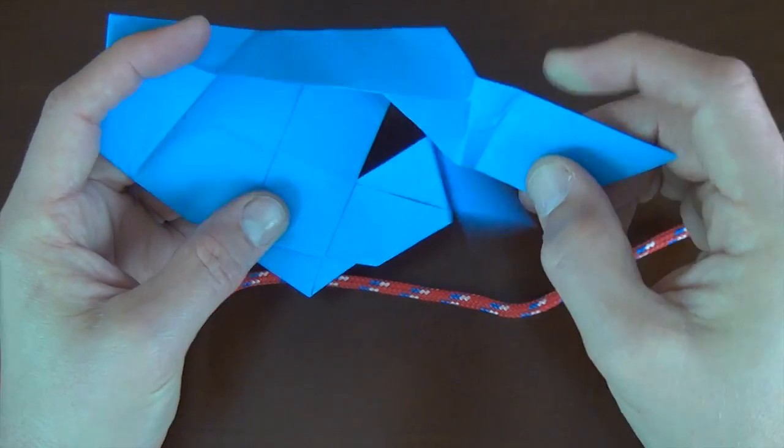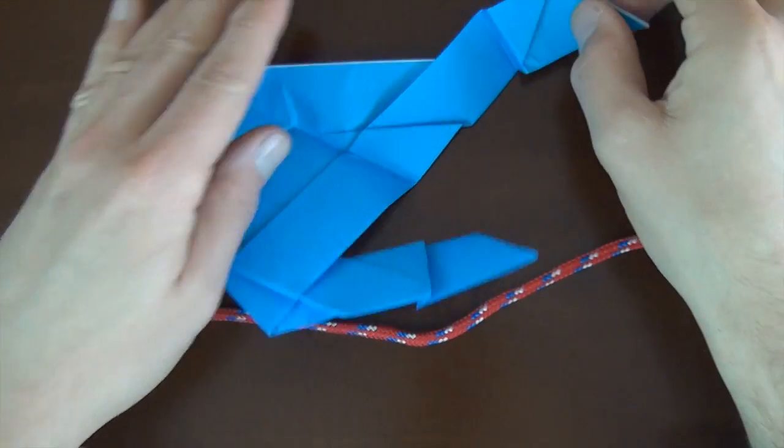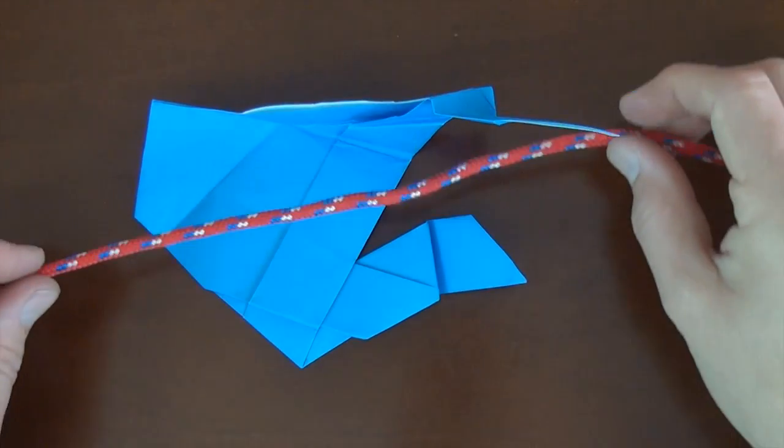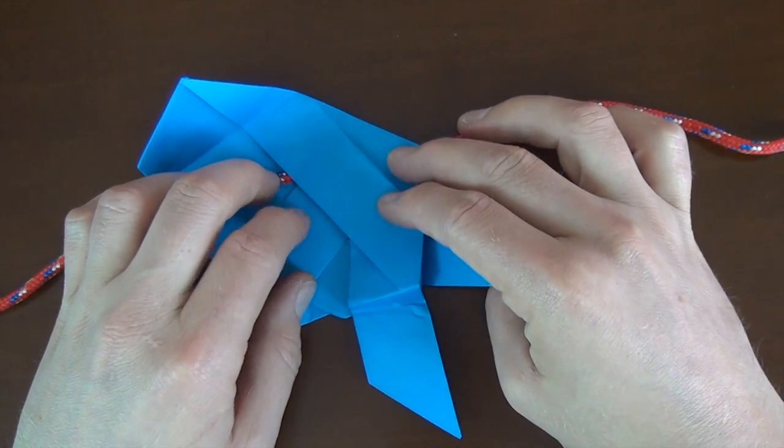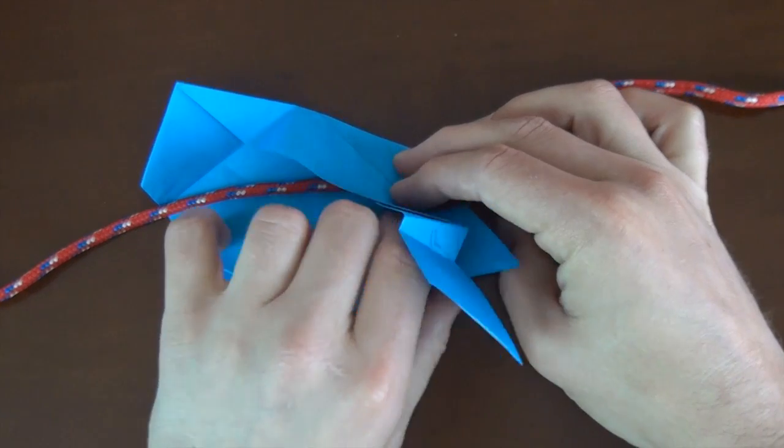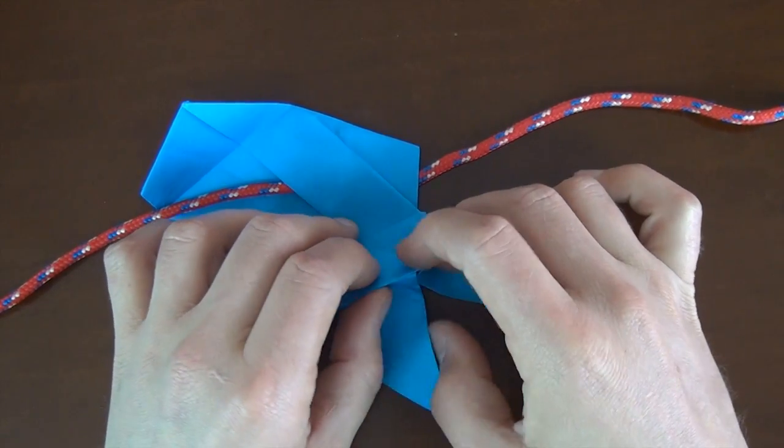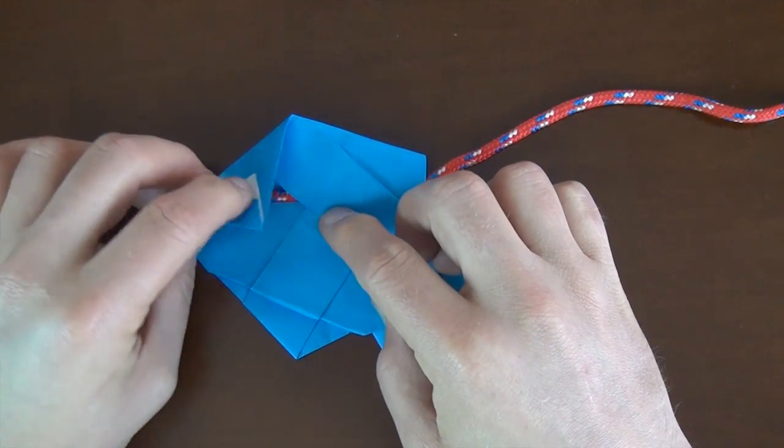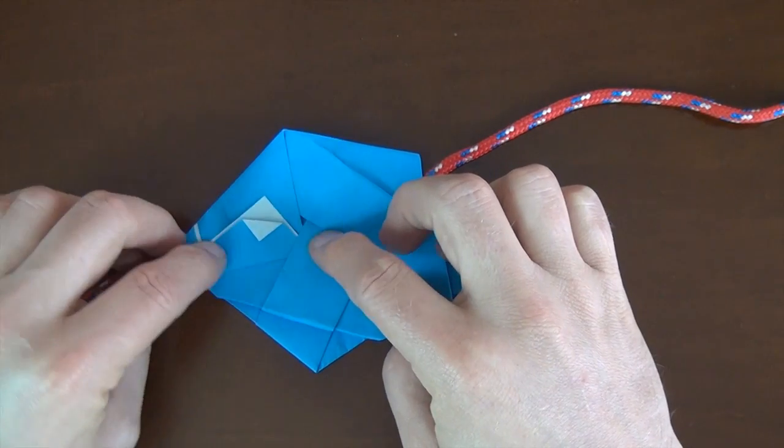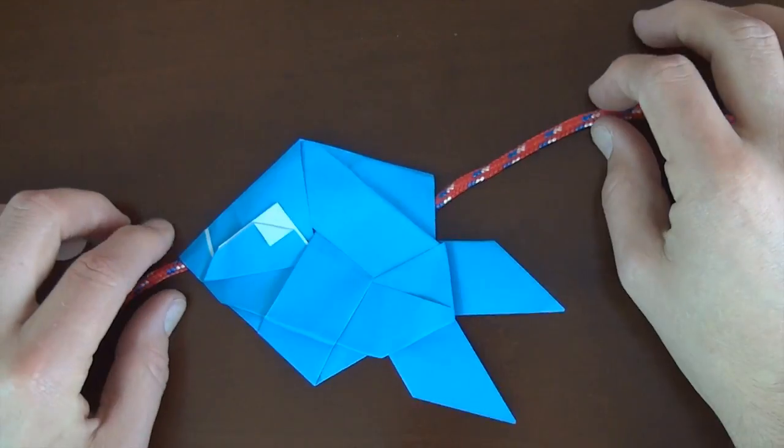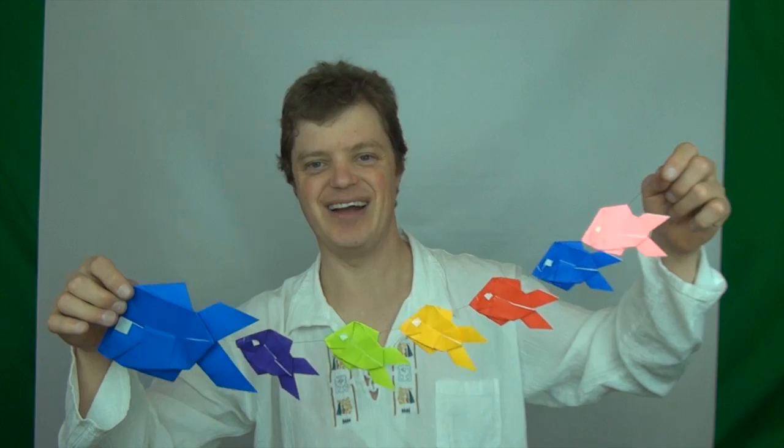So what you do is you just unfold this flap. And you're going to take this flap and unfold it. And you stick your thread or string or cord right here. And you close it back up. And put it back like it was. And now you close this over and stick it back like that. And here you have the fish. And it hangs like this.